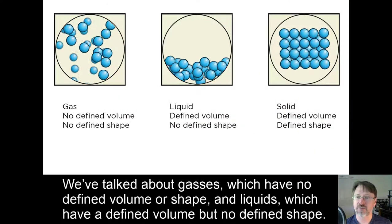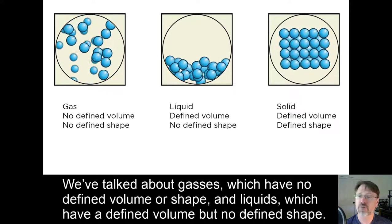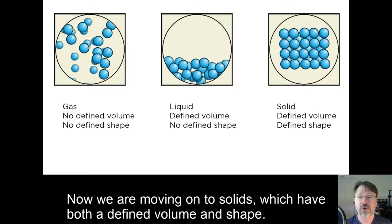We've talked about gases, which have no defined volume or shape, and liquids, which have a defined volume but no defined shape. Now we're moving on to solids, which have both a defined volume and shape.